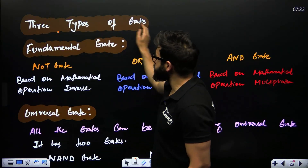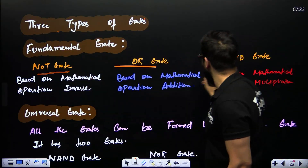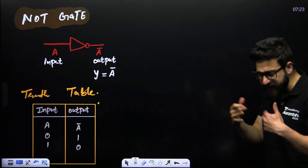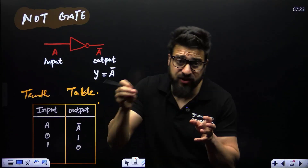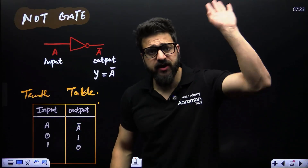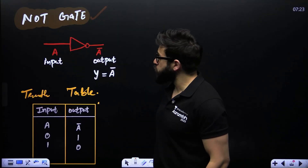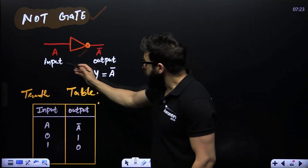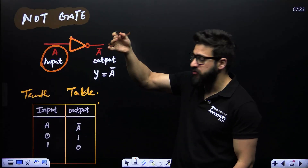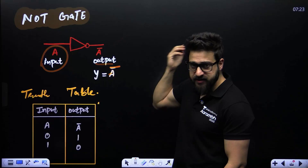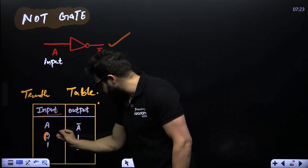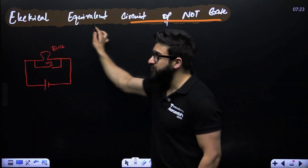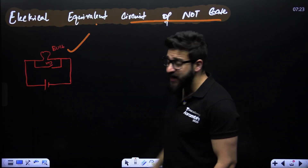There are three types of gates: fundamental gates are NOT, OR, and AND. Universal gates are NAND and NOR. These gates are devices in which we give some input, they perform a mathematical operation, and give us output. First, we have the NOT gate. This is its symbol — a triangle-like structure with a ball at the output. If we give input A, its job is to do the inverse, and it will give output A-bar. If you give input zero, output is one; if input is one, output is zero.